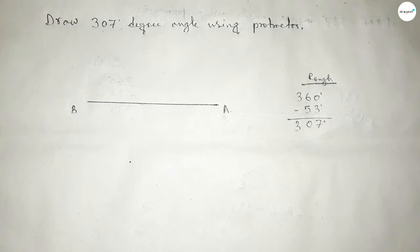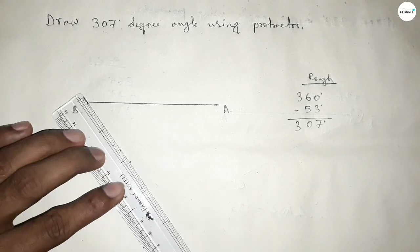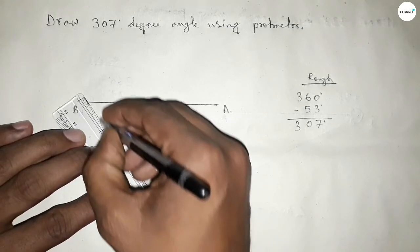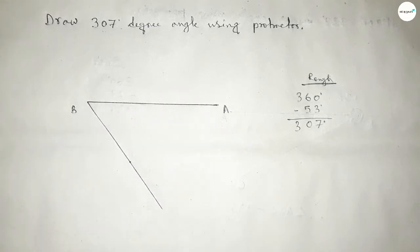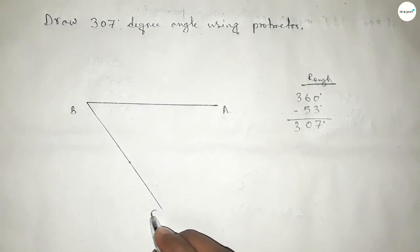Now joining this and taking here C point. So angle ABC up to this, so this is 307 degree angle.